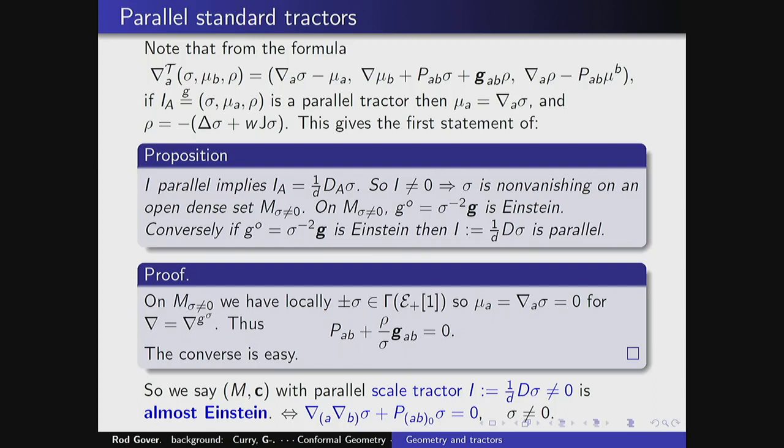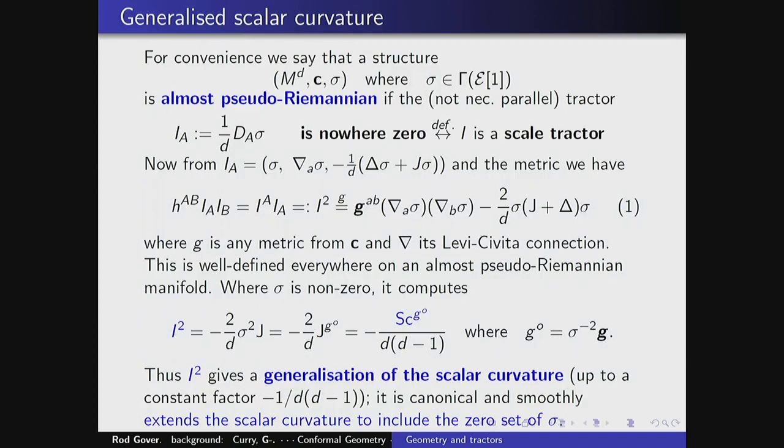We call this thing the scale tractor. It's a conformally invariant operator that maps σ to the triple (σ, ∇σ, bottom slot). If I is parallel, then I has to be in the image of that operator. We say the manifold is almost Einstein if it's a conformal manifold equipped with a parallel tractor — assuming the manifold is connected, then on an open dense set σ is non-zero and you get an Einstein metric. So it's almost everywhere Einstein.